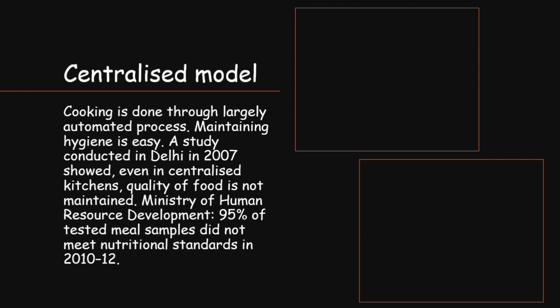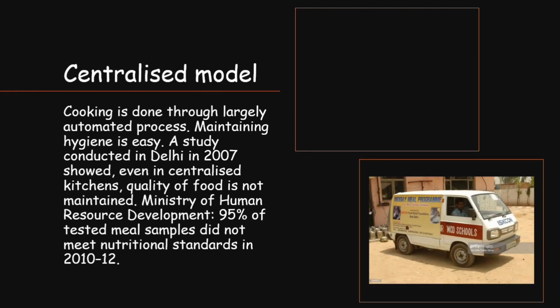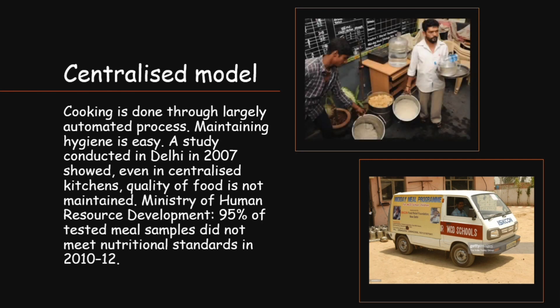The centralized model involves an external organization cooking and delivering meals to schools. Large-scale cooking is done through a largely automated process, making it easier to maintain hygiene. However, a study on centralized kitchens conducted in Delhi in 2007 found that quality of food was still not maintained. The Ministry of Human Resource Development reported that 95 percent of tested meal samples prepared by NGOs in Delhi did not meet nutritional standards in 2010 to 2012.